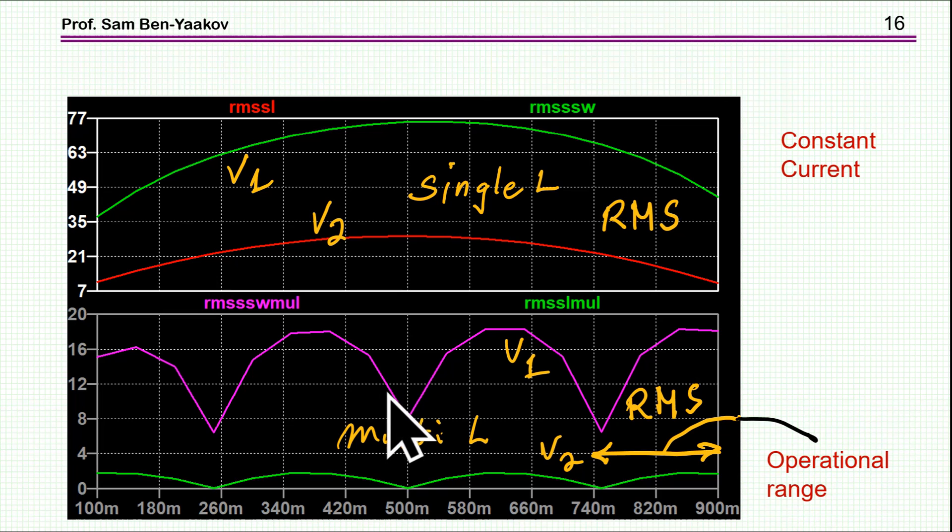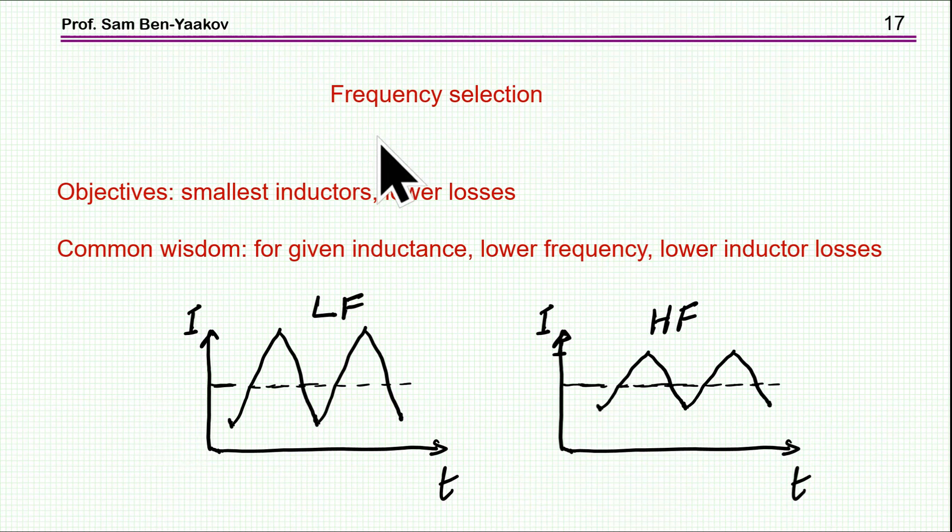Now what is the desired operating frequency? We like to have small inductors, and then we have to have lower losses. Obviously the higher the frequency, the smaller the inductor. The lower losses brings up a problem here or a question I should say.